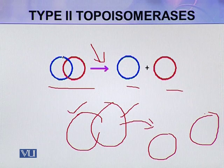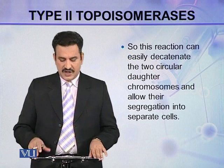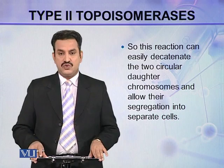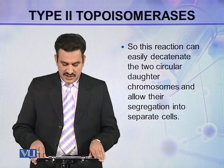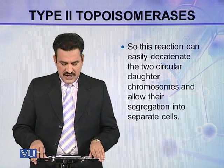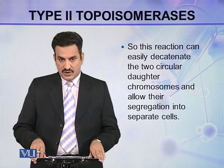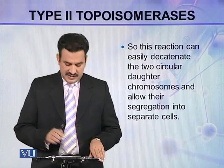Two chromosomes are segregated by the action of topoisomerases. This reaction by type 2 topoisomerases can easily decatenate two circular chromosomes and allow their segregation into separate cells.